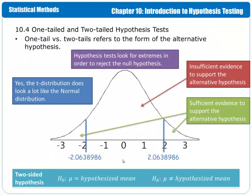One versus two tails refers to the form of the alternative hypothesis. When we have not-equals as our inequality sign, that means we have a two-tailed test. Looking at this t-distribution, the hypothesis test is looking for extremes in order to reject the null hypothesis. We hypothesize that the mean value is somewhere in the middle. If it turns out it is not exactly in the middle, that's okay — we're only going to reject the null hypothesis if we have sufficient evidence to the contrary.